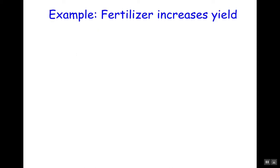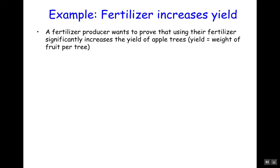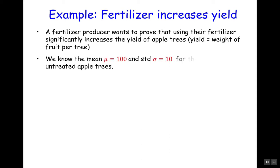So let's think about a simple example. We have some fertilizer producer and they want to prove that using their fertilizer significantly increases the yield of apple trees. Let's say that yield is the weight of the fruit generated per tree. Suppose we know that the mean is 100 pounds and the standard deviation is 10 pounds for the yield of untreated apple trees — information we already know from all of the previous trees measured.